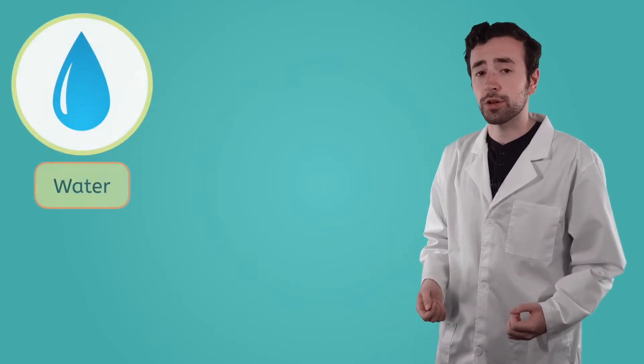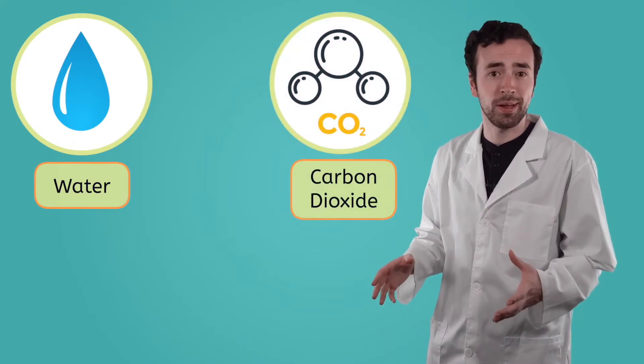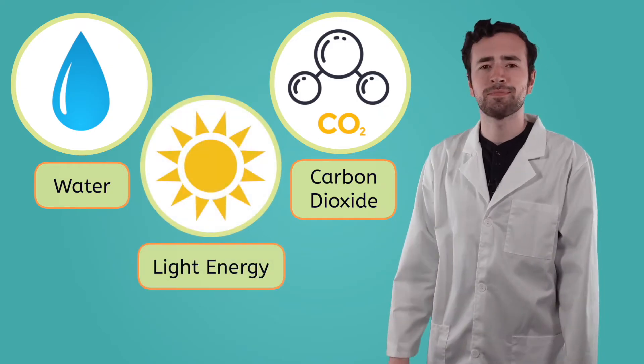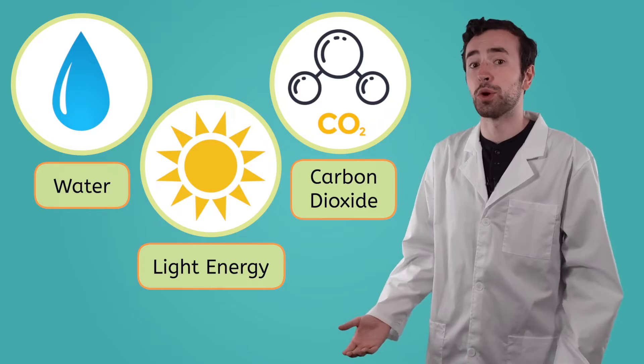It all starts with having the right ingredients. Plants need three key components for photosynthesis. Water. Carbon dioxide, a gas that makes up a large part of our atmosphere. And sunlight. Getting these components isn't as simple as picking them up from the grocery store.